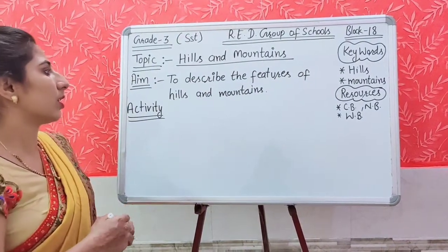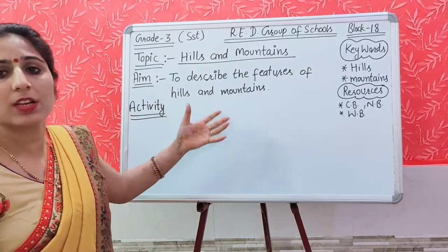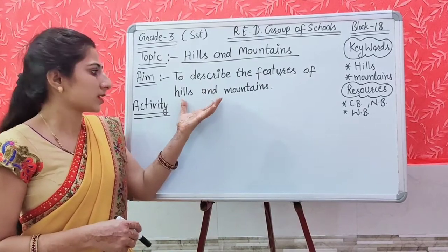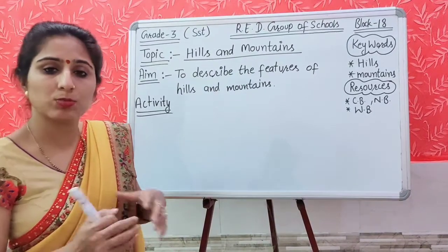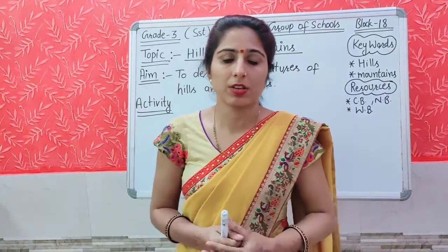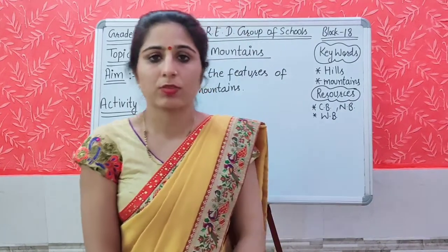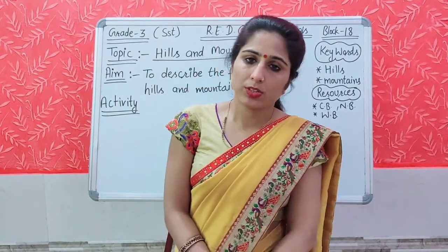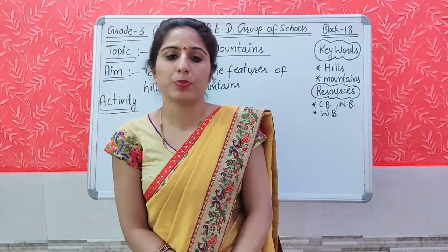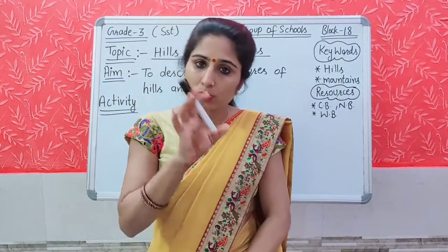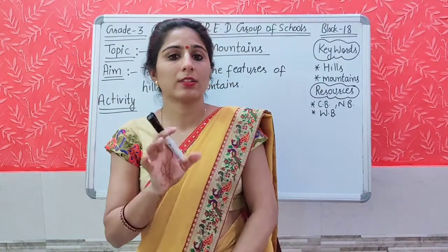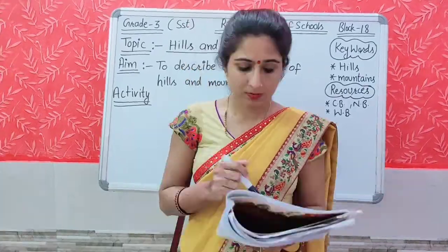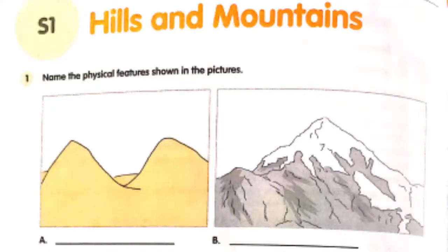Now it is time for Activity 1. In this activity, I am going to show you two pictures. You will observe these two pictures very carefully and then find out the differences. Look at the pictures and write the name of the physical features, and also write two differences between these features.